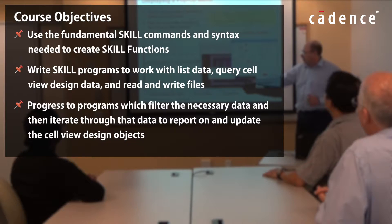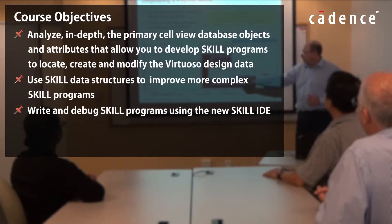Leveraging the SKILL language in your design flows will save your design team valuable time and also reduce the risk of making critical mistakes. An in-depth analysis of the primary cell view database objects and attributes allows you to develop SKILL programs to locate, create, and modify your Virtuoso design data. SKILL data structures are also introduced to provide options for improving your code. The new SKILL IDE is promoted to help you write and debug SKILL programs, and you will be a more productive programmer once you are competent using the SKILL IDE.